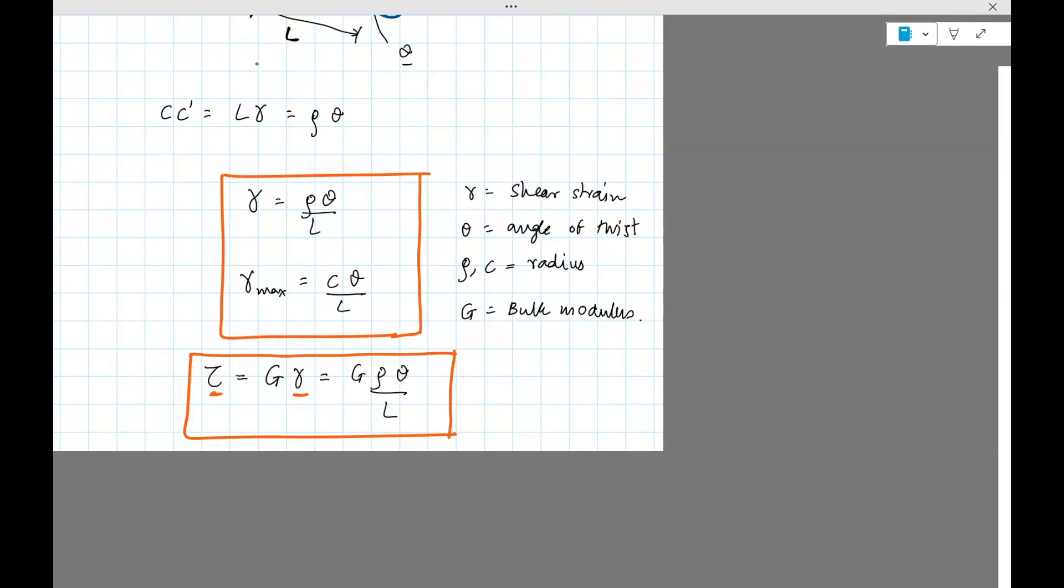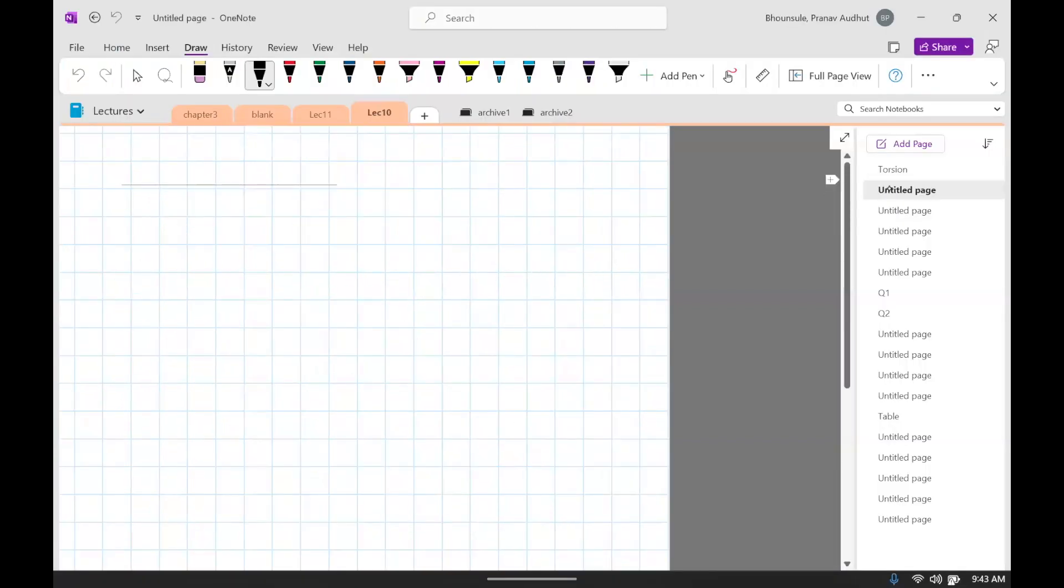You could also compute the maximum, to the next page. So you could also compute the maximum shear stress. It's simply putting the maximum shear strain gamma, so gamma max. So you'll put essentially C for rho, and then you'll get a formula for the maximum shear stress. Let's write that down. So maximum shear stress tau max is simply G gamma max, but gamma max is the radius theta divided by L.